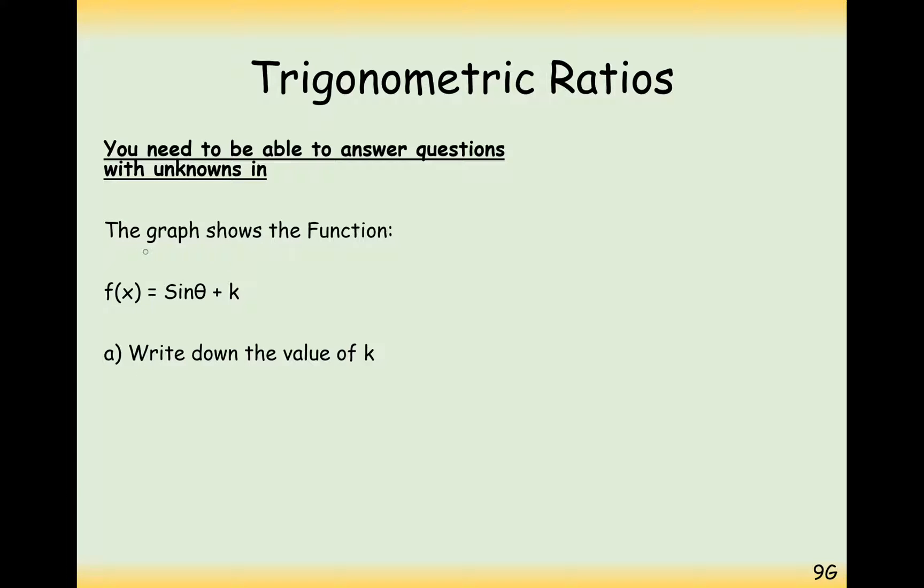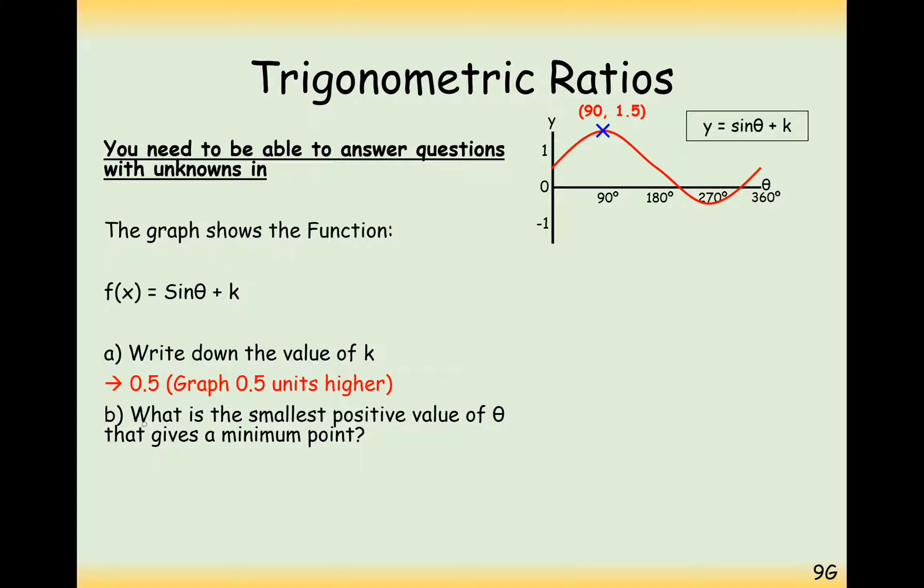A little question they could ask you then. The graph shows the function sine theta plus k, and we have an intersection up here at 90, 1.5. Write down the value of k. Well, what we could do here is compare it to the normal sine graph that would start at 0, where this starts here. And you would usually intersect at 90 at 1, but instead here it's 1.5. So we can see here we've just shifted it upwards by 0.5. What is the smallest positive value of theta that gives a minimum point? So the smallest possible value of theta that gives a minimum point here would be the 270 marker here, and that point would be at minus 0.5.